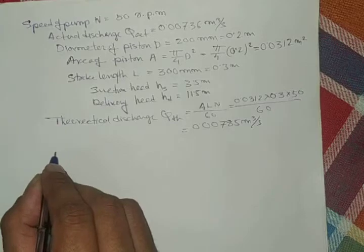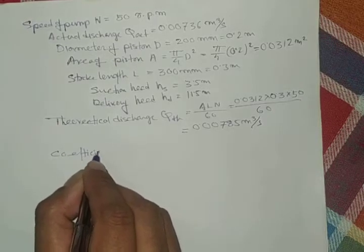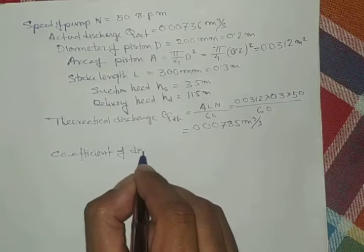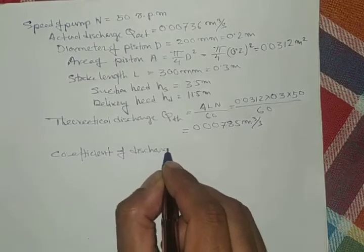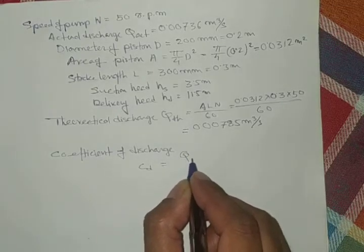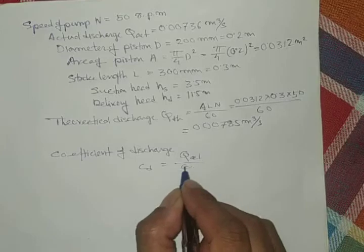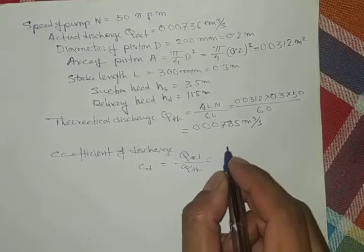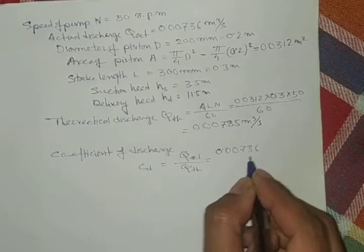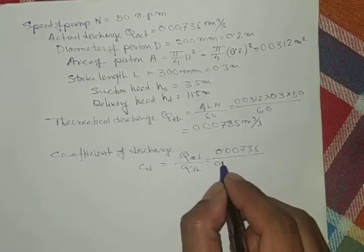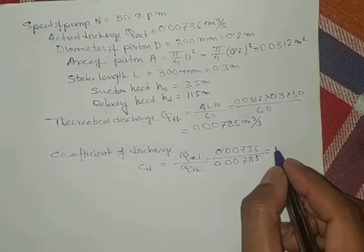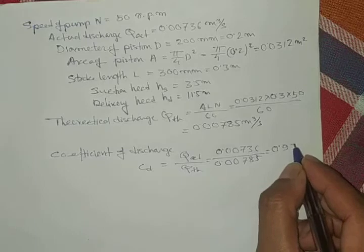Coefficient of discharge, C_D, is actual discharge divided by theoretical discharge. So, 0.00736 divided by 0.00785 gives 0.937.